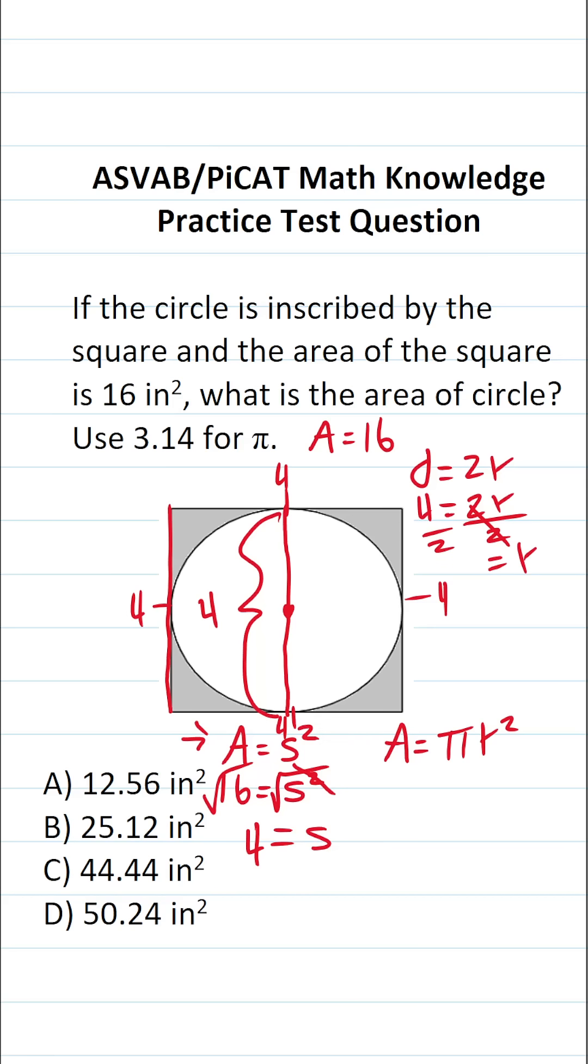This crosses out. This says r equals 4 divided by 2, which is 2. So the radius of this circle is going to be 2.